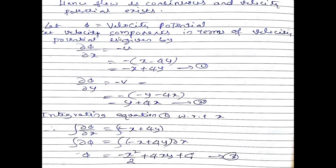Next, we find the velocity potential form. Let φ be the velocity potential. The velocity component in the x direction gives: ∂φ/∂x = -u = -(x - 4y) = -x + 4y. This is equation number one.